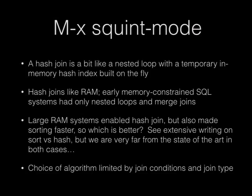A couple of things we can say about hash joins: they need a lot of RAM, because you're building a temporary hash table in memory, whereas the other strategies don't necessarily need any RAM. RAM might be helpful if you're sorting for a merge join, but it's not necessary for index scans, for example. It was the invention of large RAM systems that led to hash joins being invented. But of course, when you have more RAM, that's also good for sorting.